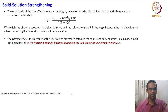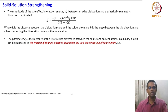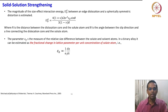This is a very important point. This interaction energy is directly related to epsilon_B, which is a measure of relative size difference. How is it measured? Epsilon_B is equal to 1 by A times dA by dC — that is, a fractional change in the lattice parameter per unit concentration of the solute atom.